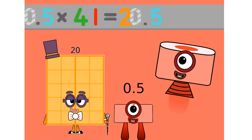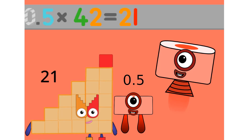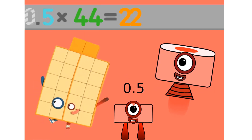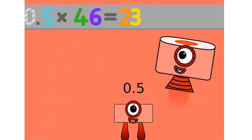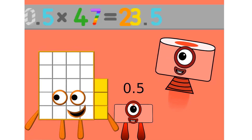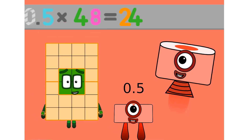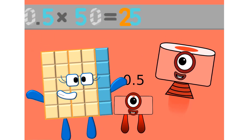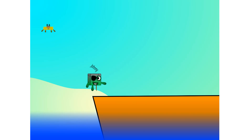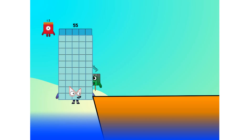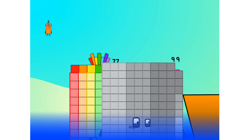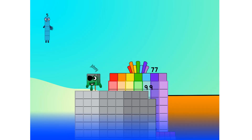0.5 times 41 equals 20.5. 0.5 times 42 equals 21. 0.5 times 43 equals 21.5. 0.5 times 44 equals 22. 0.5 times 45 equals 22.5. 0.5 times 46 equals 23. 0.5 times 47 equals 23.5. 0.5 times 48 equals 24. 0.5 times 49 equals 24.5. 0.5 times 50 equals 25.